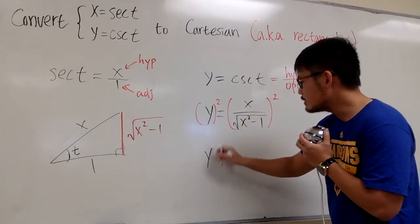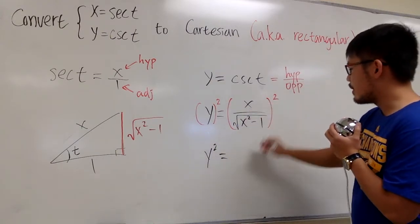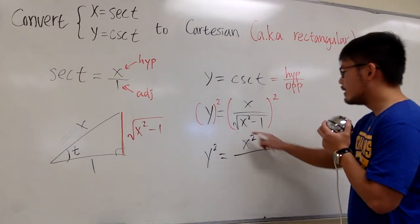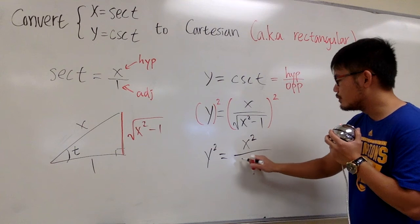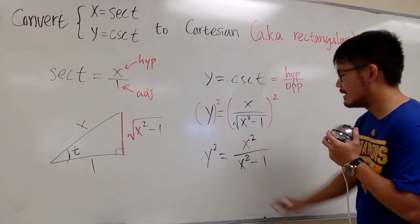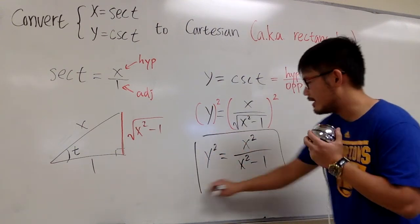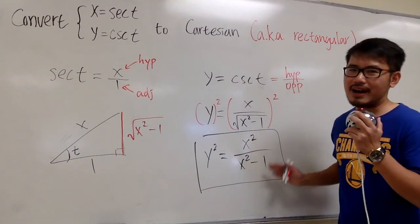So we have y squared equals to x squared over the square root and the square root cancel each other. So on the denominator, we just have x squared minus 1. And this right here, I'll just leave it as the final answer.